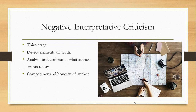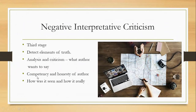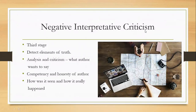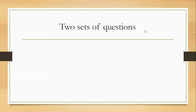In positive interpretative criticism, we try to see what the author wants to say by examining the literal meaning, the real meaning, any hidden meaning, or any obscure meaning. But in negative interpretative criticism, we are more concerned with the competency and honesty of the author. We check whether the author has been honest when writing observations and whether he was competent — was he the right person to write about it? The two key words are competency and honesty.